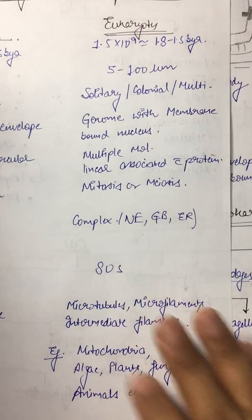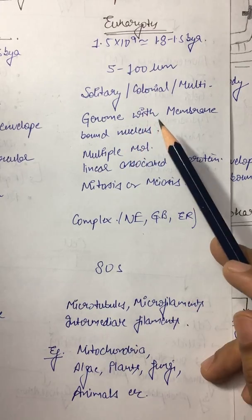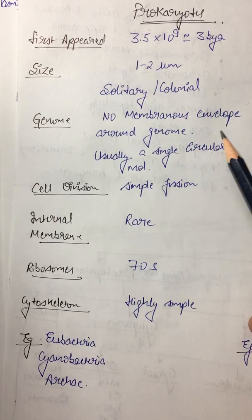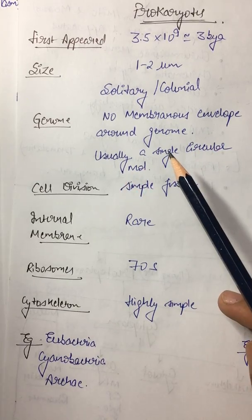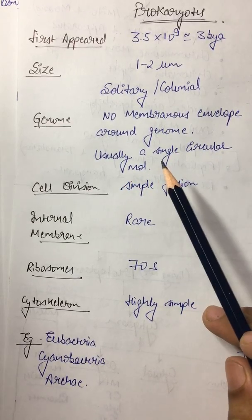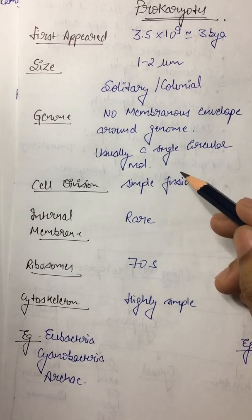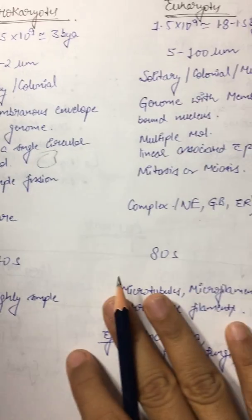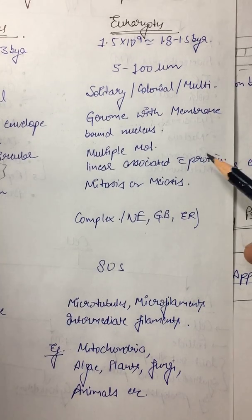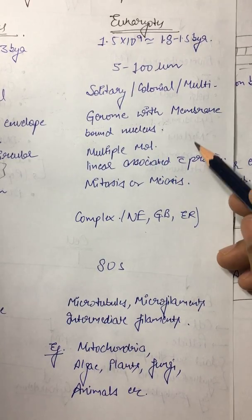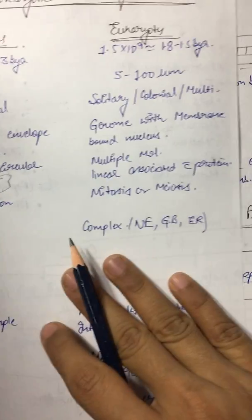But in eukaryotes it can be solitary, colonial, or multicellular. Genome: it's non-membranous envelope around genome, means there is no membrane, usually a single circular molecule, its genome is single circular molecule, either DNA or RNA. Whereas in eukaryotes it's multi-molecular, linear, associated with protein. That protein is histone and it is linear.